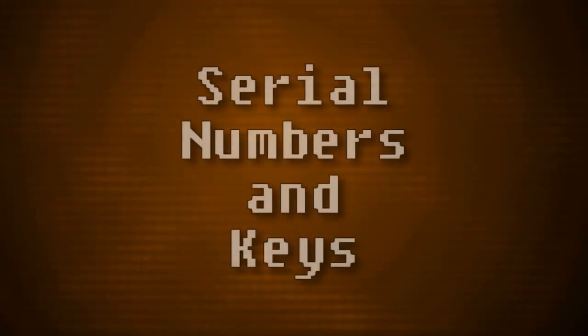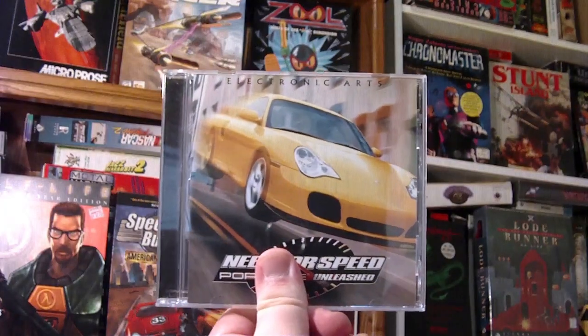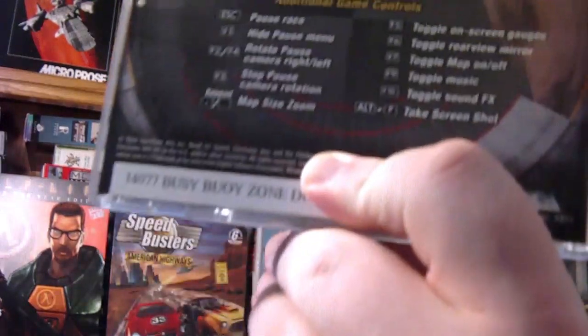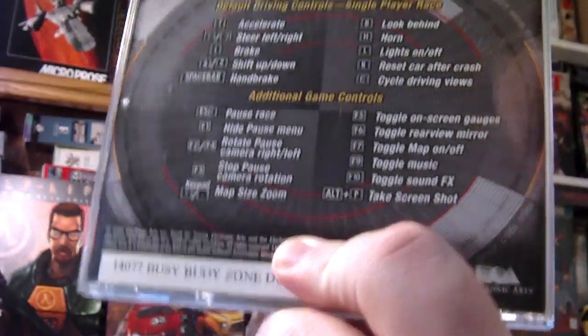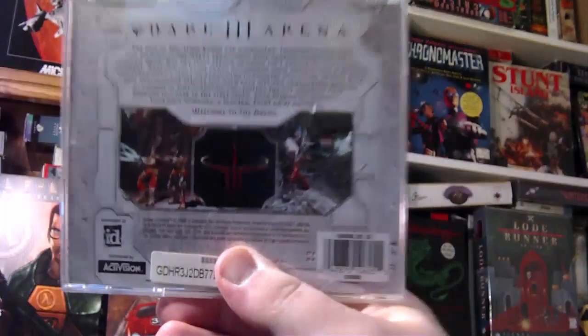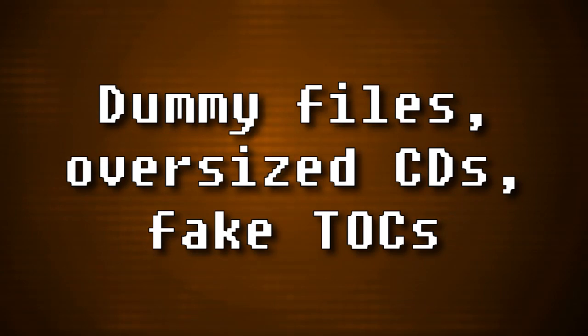It wasn't long before other methods were used to verify CD-ROM games, like serial numbers and alphanumeric keys. These are simple and largely painless — you got a unique key code somewhere in the package, usually on the back of a manual or a jewel case, and entered it when installing. Honestly, it doesn't prevent much copying unless the key is also used to play online or something. So more protection was deemed necessary, like dummy files, oversized CDs, and fake tables of contents.